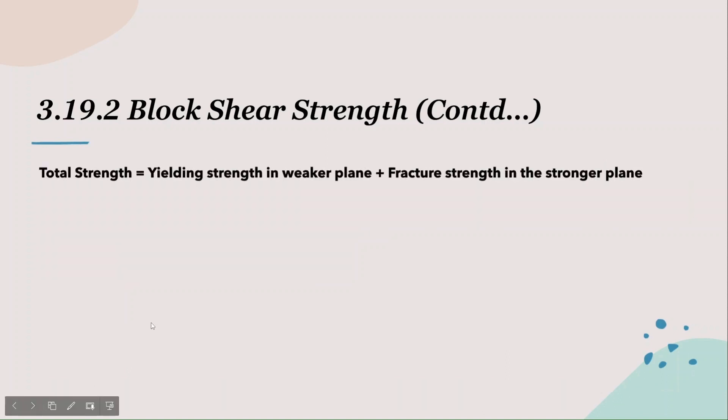So we saw how this equation was derived. The next question is: how do we know which plane is the stronger plane and which is the weaker? There are two possibilities: first, a strong tension plane and a weak shear plane; and second, a weak tension plane and a strong shear plane. AISC answers this by asking us to solve for both conditions and then determine the governing condition. You calculate the block shear strength of both possibilities, and the smaller value will be the block shear strength.